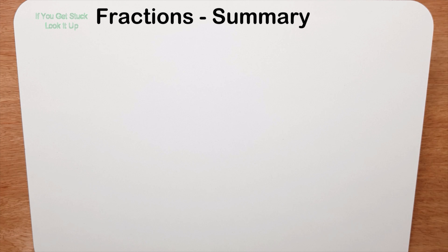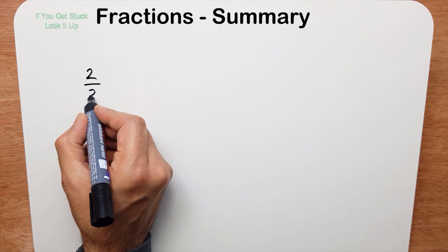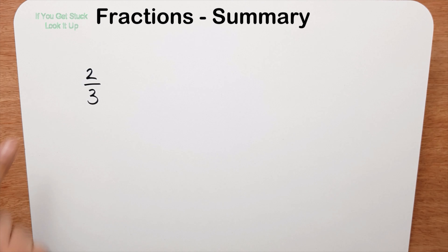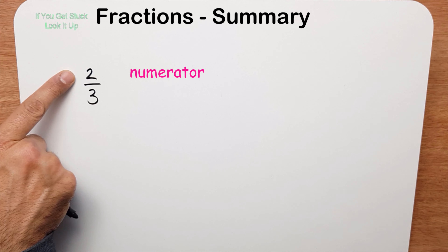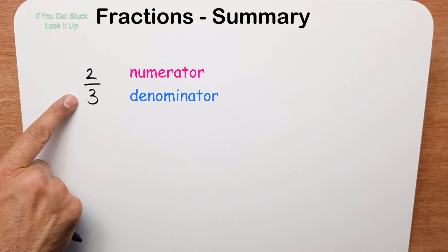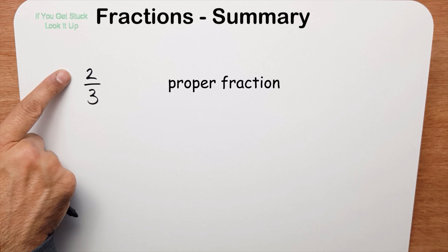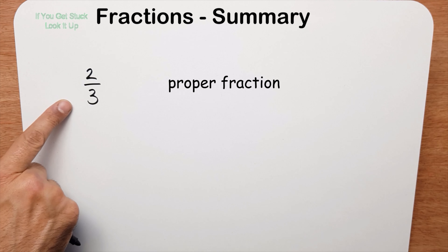In this video I'm going to look at the work we've done with fractions so far. Here's a fraction: two-thirds. The top part is called the numerator, the bottom part is called the denominator. This is a proper fraction because the numerator is smaller than the denominator.